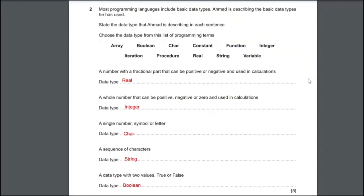The third description is a single number, symbol or letter. So this basically has two possible data types: char (character) or string. A character is, as said in the description, a single number, symbol or letter. But a string can have as many numbers, symbols or letters as possible. So you can write either character or string and you are going to get the mark.